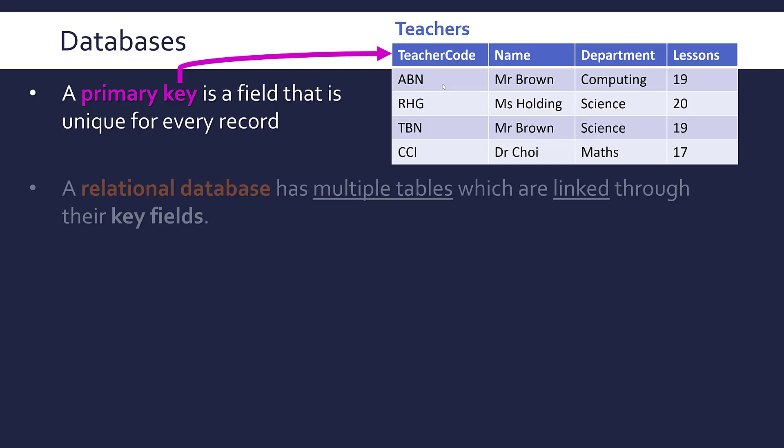A slightly better database compared to a flat file database is a relational database, which has multiple tables that are connected. They're linked through their key fields. A primary key is needed to access each individual record, but it also enables you to connect up similar but different tables.